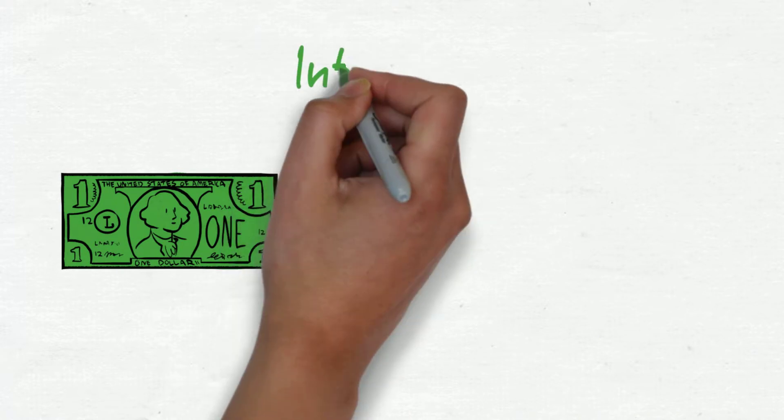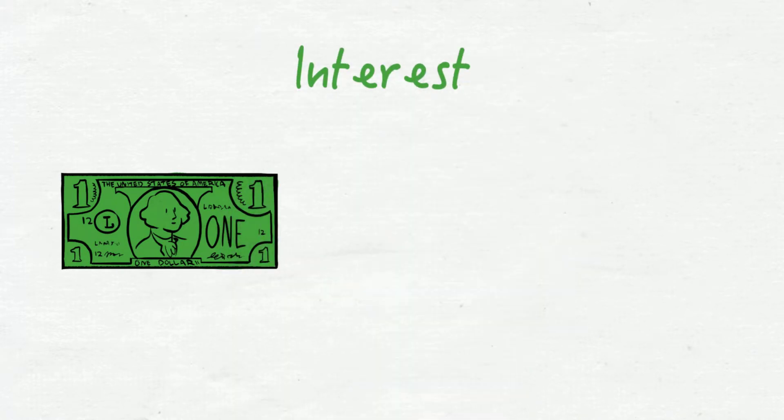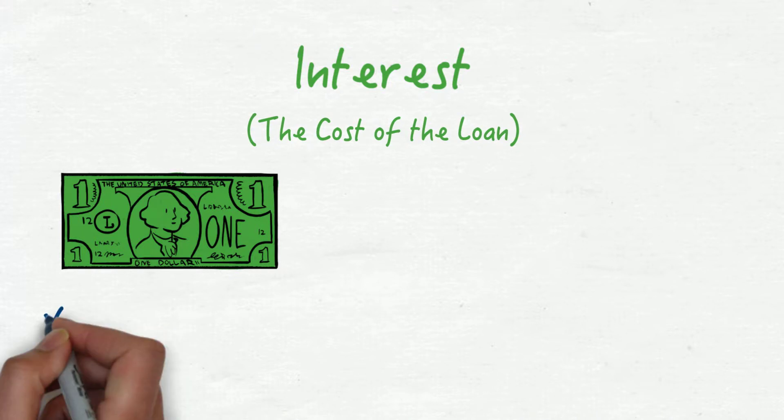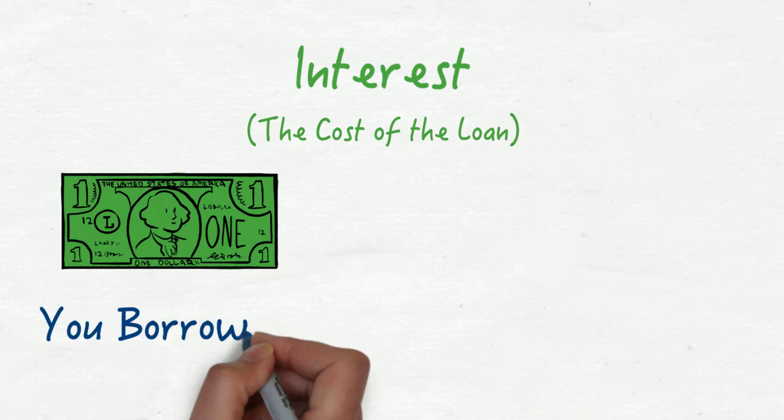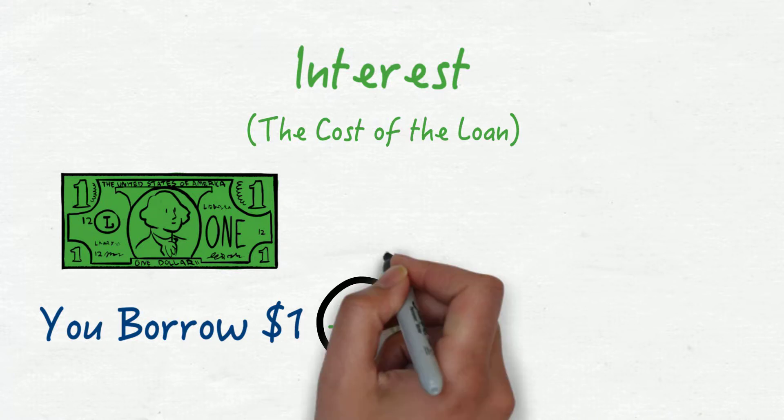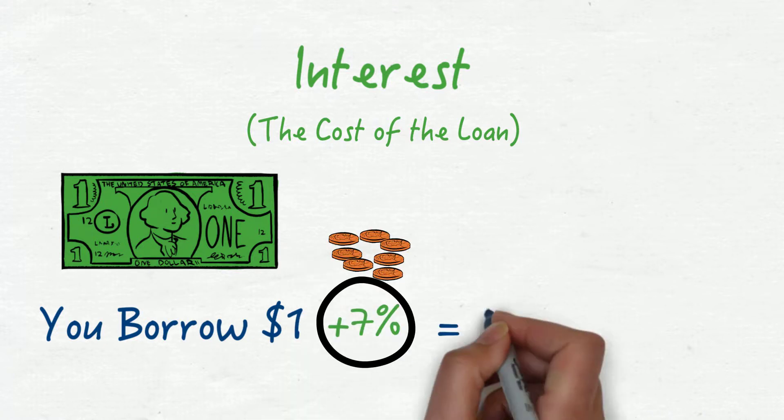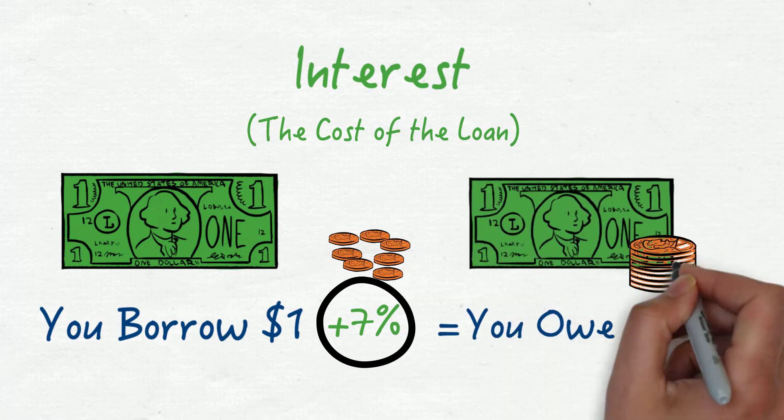Now let's talk interest. The interest is how much it costs to take out the loan, on top of the principal you'll be paying back. The amount you pay for every dollar borrowed is expressed as a percentage rate. For example, 7% means 7 cents per dollar borrowed. The higher the interest rate, the more expensive the loan.